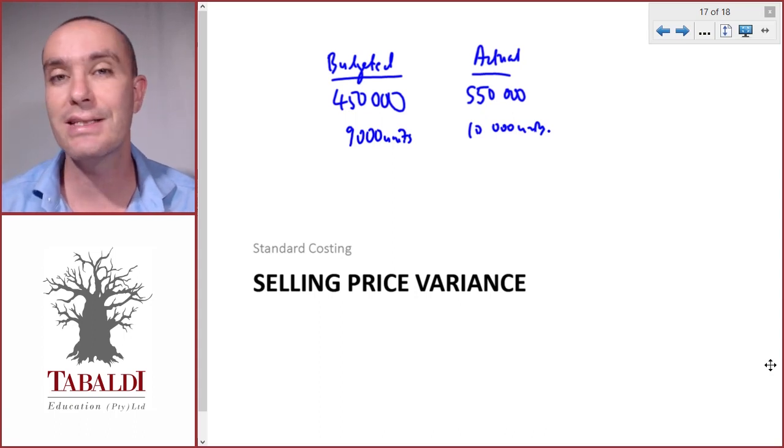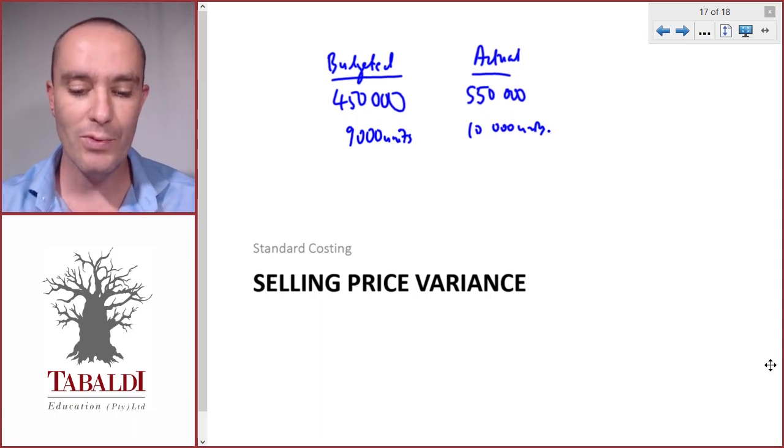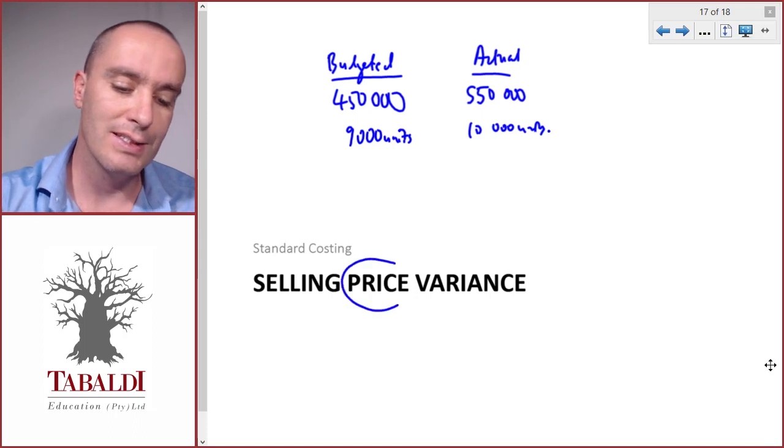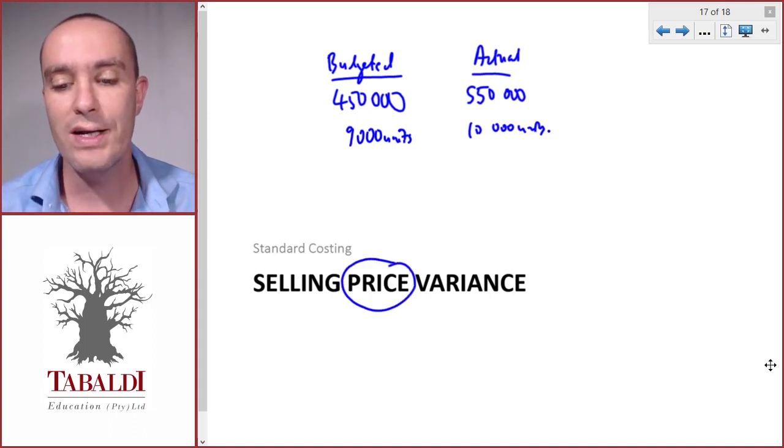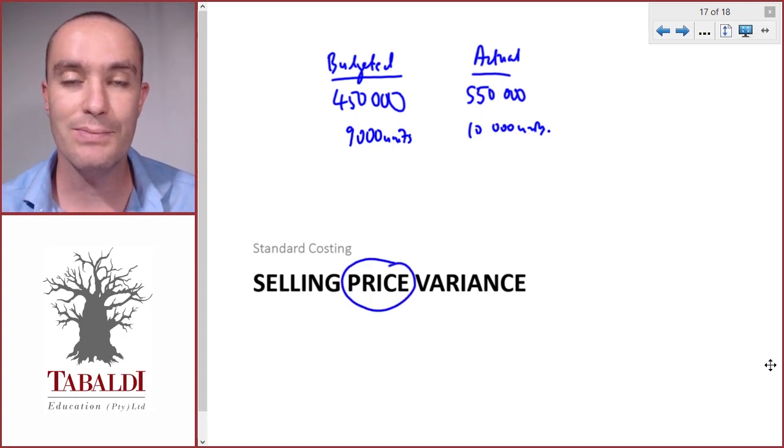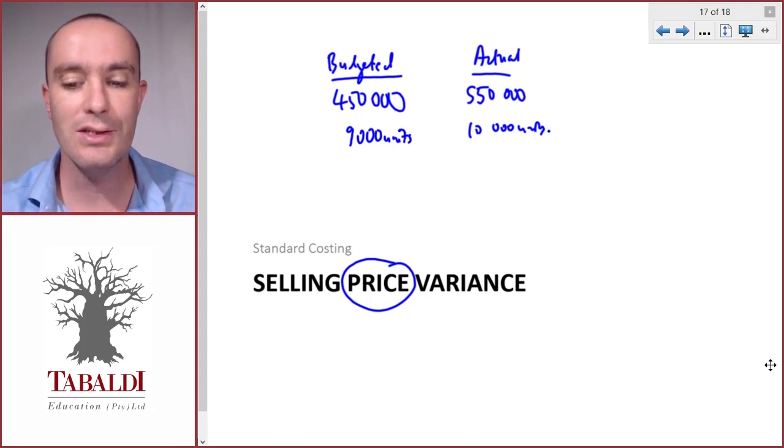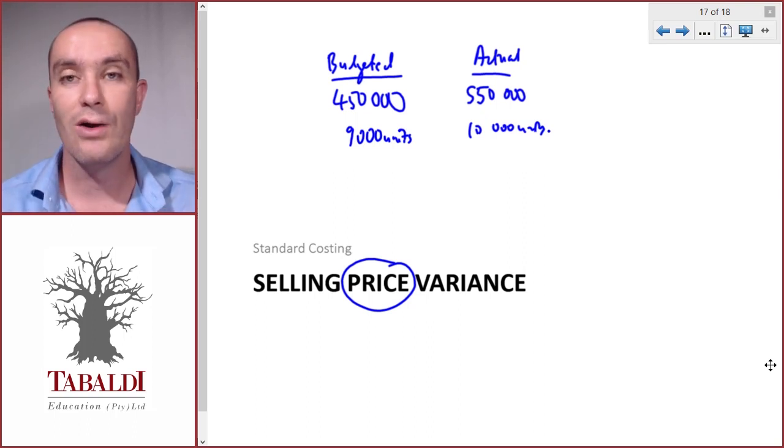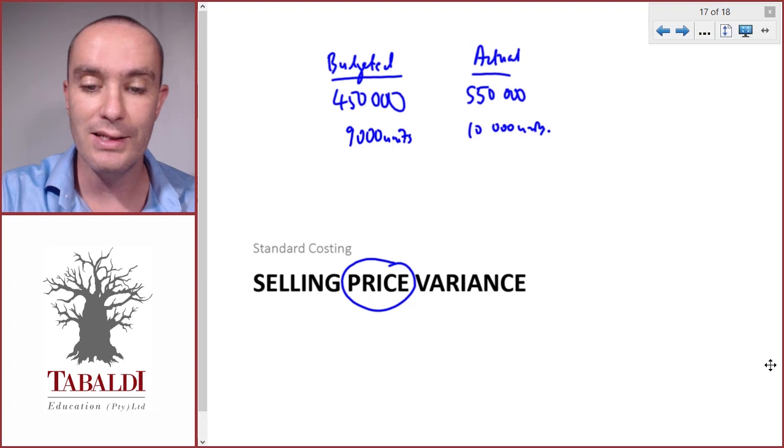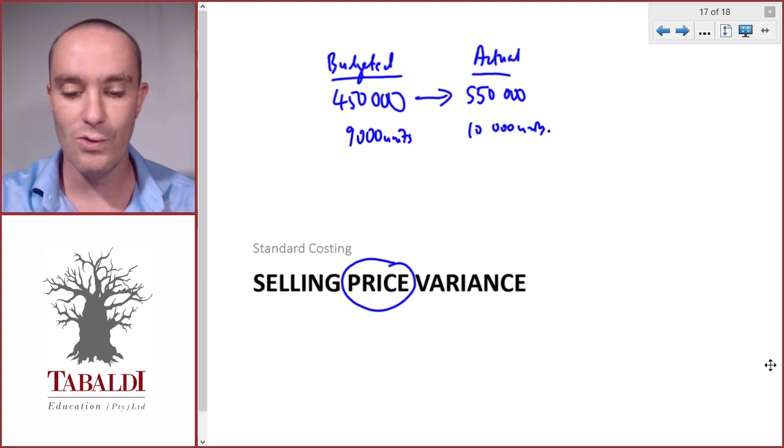It makes sense that it's more, but now we want to know: did we have a selling price variance? What difference was as a result of the price being higher or lower? It could have been that the price was lower, but because we sold so many extra units, that's why the sales increased. It's important to know what was the reason for this increase in sales.